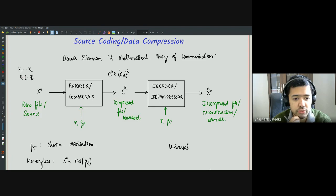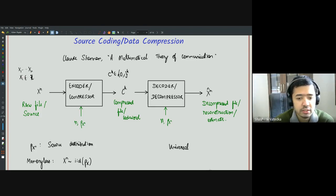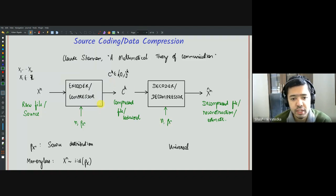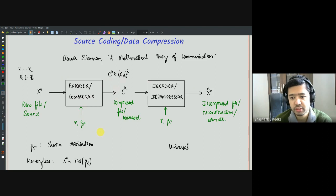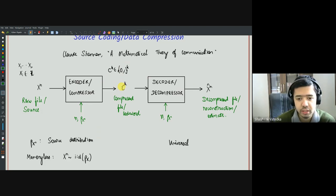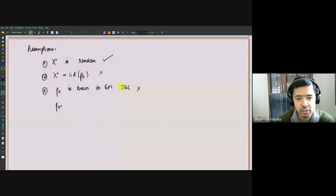We modeled the raw file to be compressed as a random sequence. We assumed that the distribution is known to both the compressor and the decompressor — so this is available for free. Using this, the goal is to design the compressor and decompressor such that either the probability of error is small and the rate is as small as possible, or we want to design a variable-length code for which the rate is as small as possible.